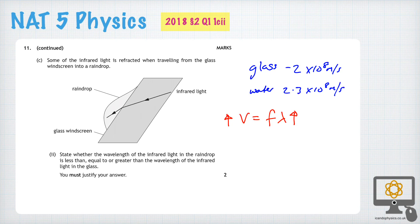And so we can say as our final answer, the wavelength is greater because the speed is greater in the water.